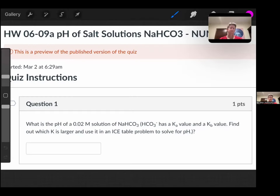For this problem, it says, what is the pH of a 0.02 solution of sodium bicarbonate? And it gives you the hints that bicarbonate has a Ka value and a Kb value. Find out which K is larger and use it in an ICE table problem to solve for pH.